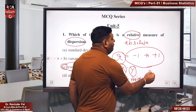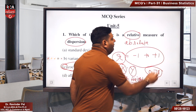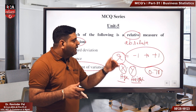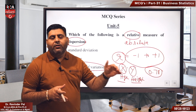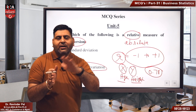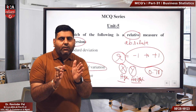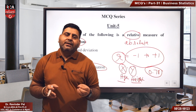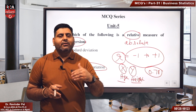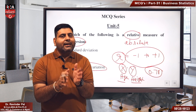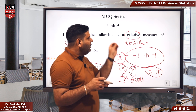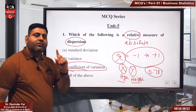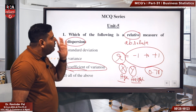Suppose my answer comes to 0.78. We will interpret it as: there is a 78% positive correlation between age and height. I am not saying 0.78 years or 0.78 centimeters — that is what makes it a relative measure. So wherever the word 'coefficient' appears in a question, it will always be a relative measurement.